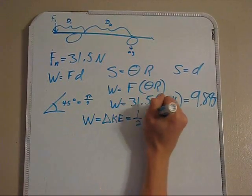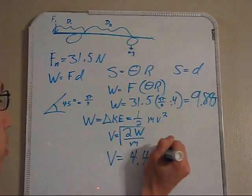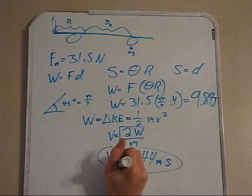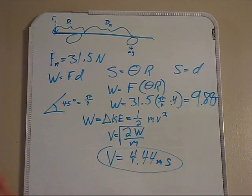With work, you can then determine velocity using a kinetic energy equation. Since this calculated velocity is the result of the board moving in an arc, it's not the velocity required.